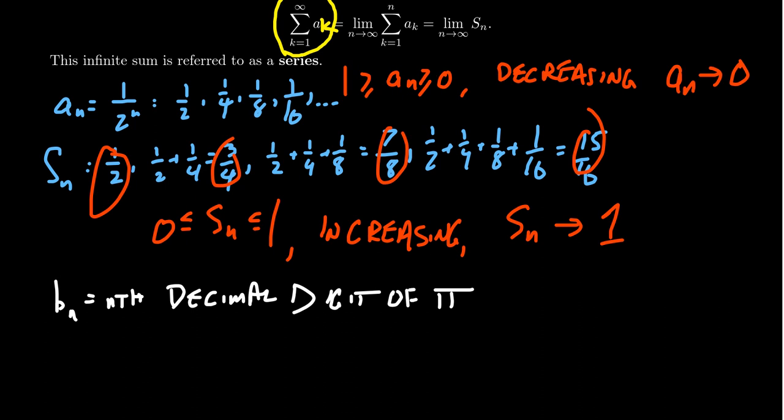b_1 would be 1, b_2 would be 4, b_3 would be 1, b_4 would be 5. Keep on going with the idea there. And so then we're going to see that pi, we often write as 3.14159, dot dot dot, right?